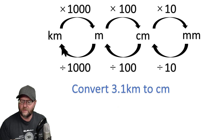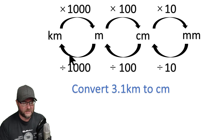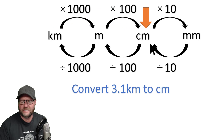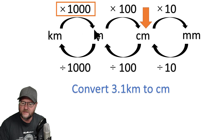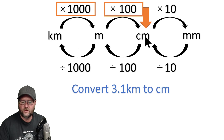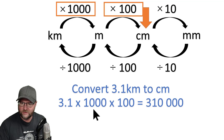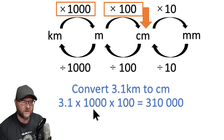What if it was more than one jump? For example, convert 3.1 kilometers to centimeters — now, it's going to be a lot of centimeters, so I know it should be a big number. Following the exact same process, I'm going to start at my kilometers, go through my meters, and end up at centimeters. So I'm actually doing two jumps with the arrows: times 1,000 and then times 100 to get to centimeters. I get 310,000 centimeters in 3.1 kilometers. That's how you use this conversion chart for lengths.